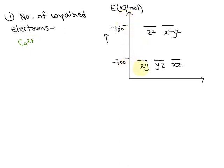Given energy levels: for xy, yz, and xz orbitals it's minus 700 kilojoules per mole, and for z² and x² minus y² the energy level is minus 450 kilojoules per mole.